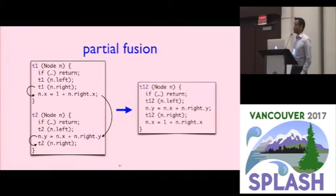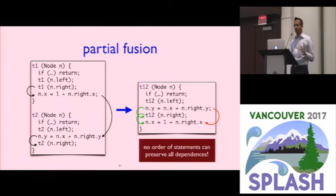If we try to do fusion, we might get something that looks like this. I'm doing a single traversal, and I've just sort of put together all of the statements. And some things work great. n.y correctly happens before I traverse the right field of the tree. The update to n.x correctly happens after I visit the right part of the tree. So those dependencies are preserved. But I'm now updating n.y before I get a chance to update n.x, and the code is broken. And in particular, there is no order of these statements that will preserve all of the dependencies in this program. I can't actually fuse these two traversals together.